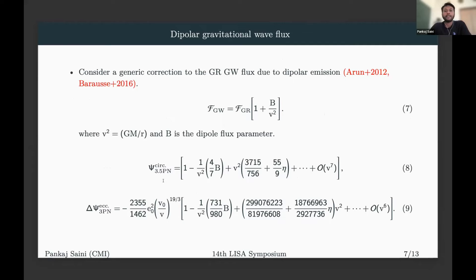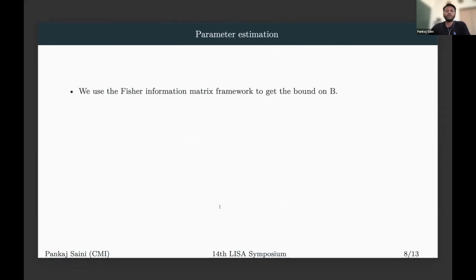To correct these waveforms for the dipole correction, we parameterize the gravitational flux with the dipole flux parameter B, which quantifies the strength of the dipole emission. These corrections to the flux are propagated to the gravitational phase: in the circular part the corrections appear as a negative 1PN term, and in the eccentric part they appear similarly. Using this, we calculate bounds on this dipole parameter using the Fisher information matrix, which gives the one-sigma width of the distribution around this parameter. The waveform parameters are: tc and phi_c (time and phase of coalescence), M (total mass), eta (symmetric mass ratio), chi_1 and chi_2 (dimensionless spins), and B (dipole flux parameter).